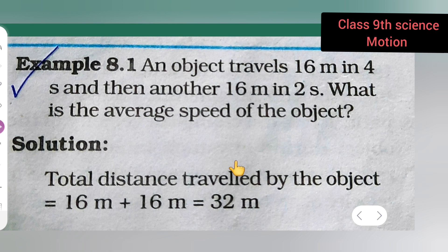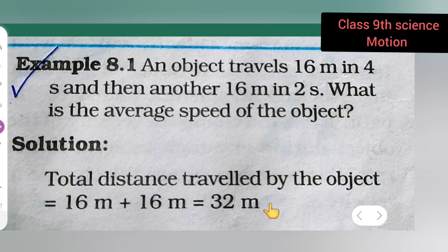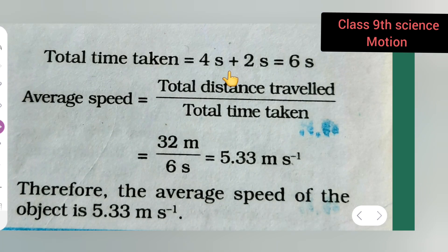So the total will be 32 meters. Next comes total time taken. For that, you need to add 4 seconds plus 2 seconds, so the total time will be 6 seconds.